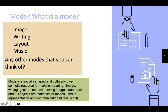Mode is a socially shaped and culturally given semiotic resource for making meaning. For example, image, writing, gesture, speech, moving image, soundtrack, and 3D objects are examples of modes used in representation and communication.